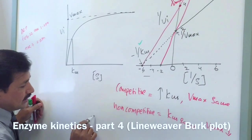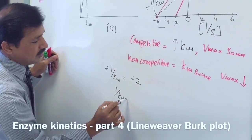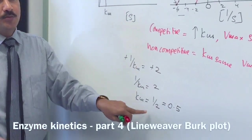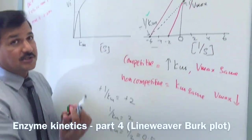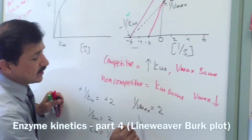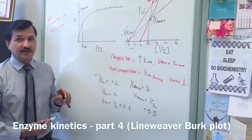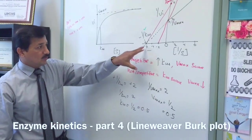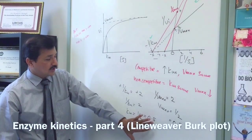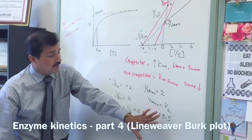For competitive inhibition: minus 1 over Km equals minus 2, so the negatives cancel and 1 over Km equals 2, which gives Km equals 1/2 equals 0.5 in the presence of the competitive inhibitor. Now for the velocity: 1 over Vmax equals 2, so Vmax equals 1/2 equals 0.5. This is how you simplify — whatever point you see is a reciprocal, so you solve for Km and Vmax accordingly.